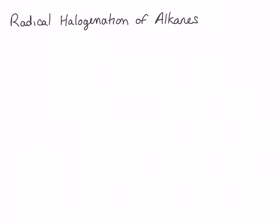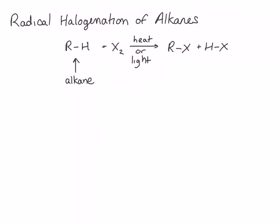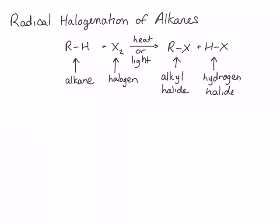The topic of this video is the radical halogenation of alkanes. The halogenation of alkanes is a substitution reaction where we replace a hydrogen on the alkane with a halogen. RH is the general formula for an alkane, X₂ is one of the halogens, RX is the alkyl halide product, and HX is the hydrogen halide byproduct. Remember that alkanes are not very active and therefore require the input of energy in the form of heat or light.